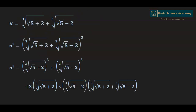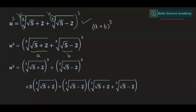So u equals the base. Now since we have cube root on both these terms, we have to take power 3 to remove this cube root. Taking power 3 to both sides gives us u³ equals cube root of (√5 + 2) plus cube root of (√5 − 2), to the whole power 3. This is in the form of (a + b)³, where a is cube root of (√5 + 2) and b is cube root of (√5 − 2). Hence we will use the formula: (a + b)³ = a³ + b³ + 3ab(a + b).